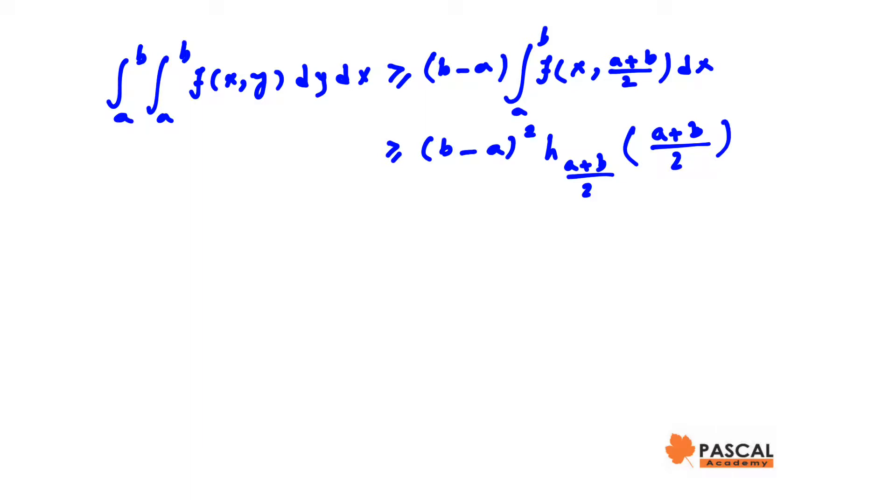This is h(x) when y is (a+b)/2. Since h is a convex function, we use the Hermite-Hadamard inequality one more time.